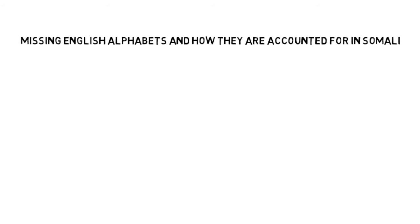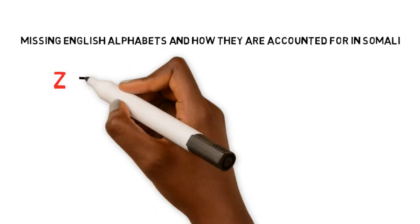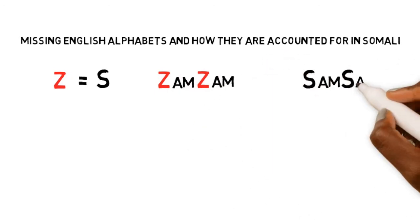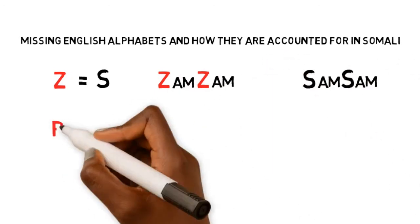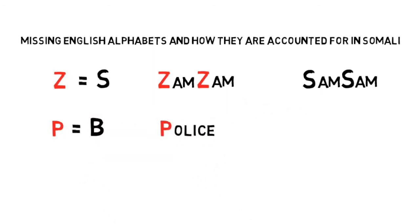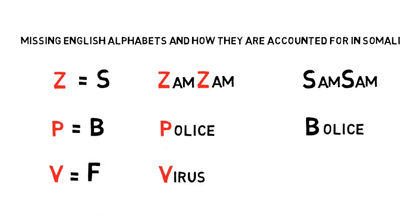If you have noticed by now, Somali does not have the letter Z and instead they replace it with the letter S. For example, a name like Zamzam will become Samzam. We all know of the famous P that becomes B. Another letter is the letter V which in turn becomes F, so 'virus' will become 'firus'.